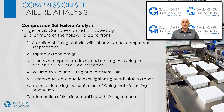In general, compression set is caused by one or more of the following conditions: selection of O-ring material with inherently poor compression set properties; improper gland design; excessive temperature causing the O-ring to harden and lose its elastic properties — high temperatures may be caused by system fluids, external environmental factors, or frictional heat buildup; volume swell of the O-ring due to system fluid; excessive squeeze due to overtightening of adjustable glands; incomplete curing or vulcanization of the O-ring material during production; or the introduction of a fluid that is incompatible with the O-ring material.